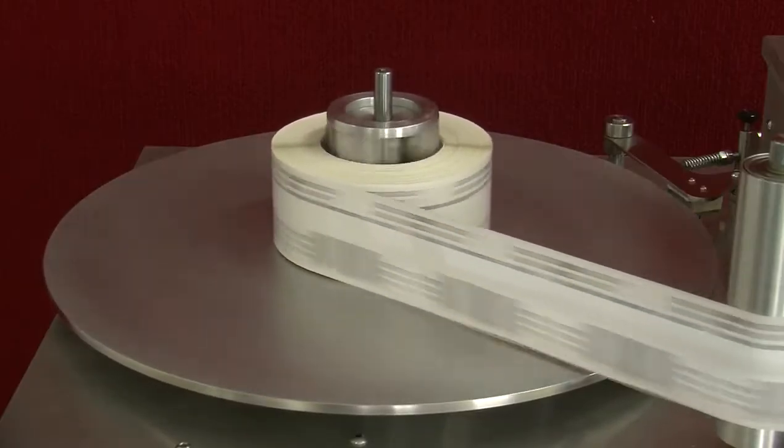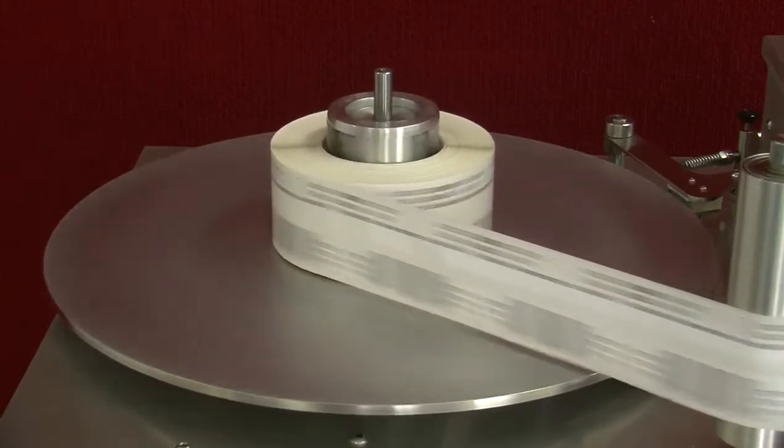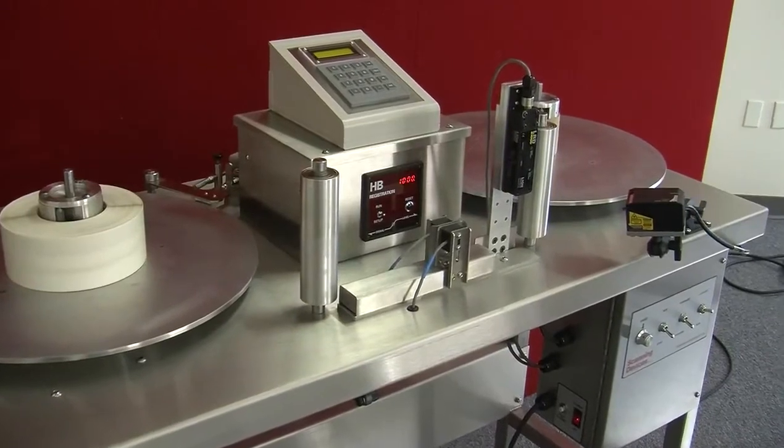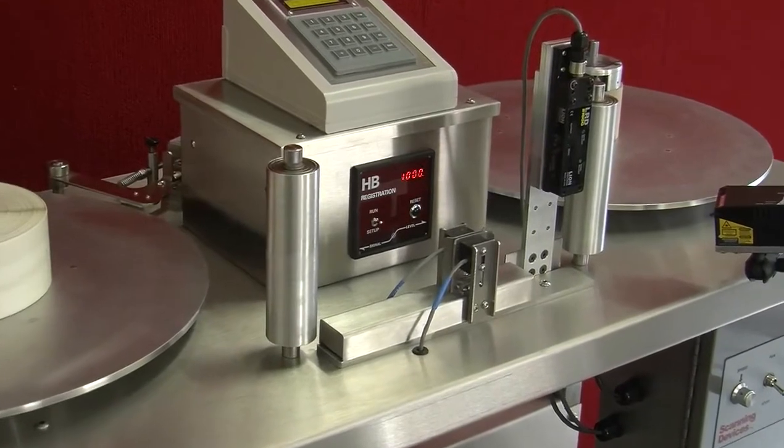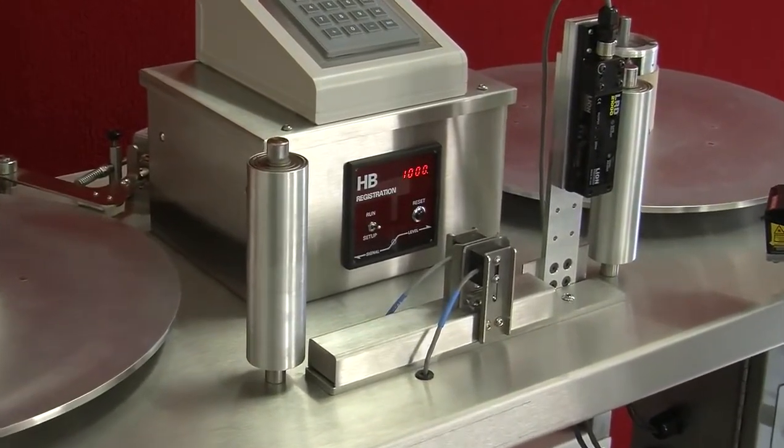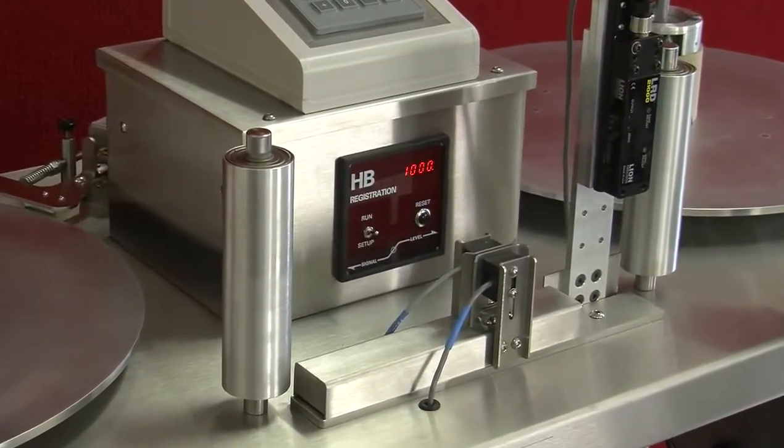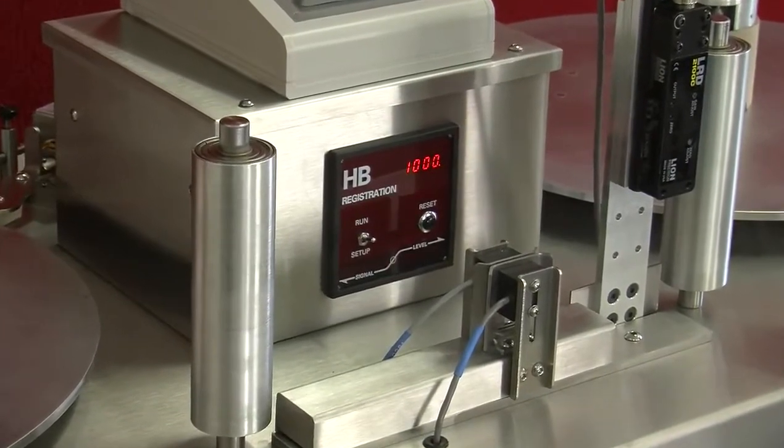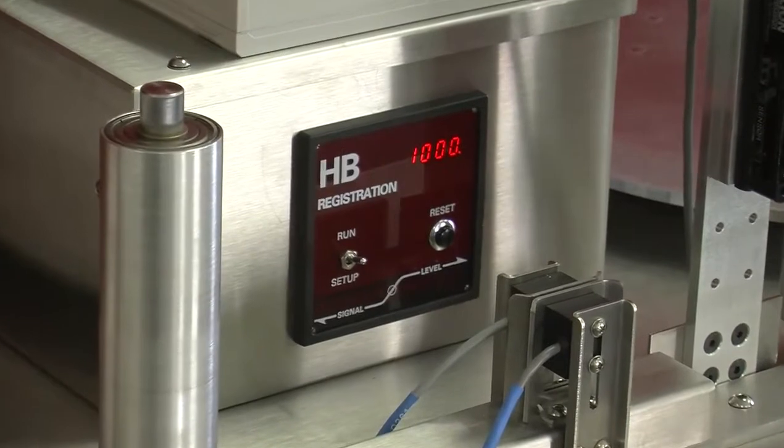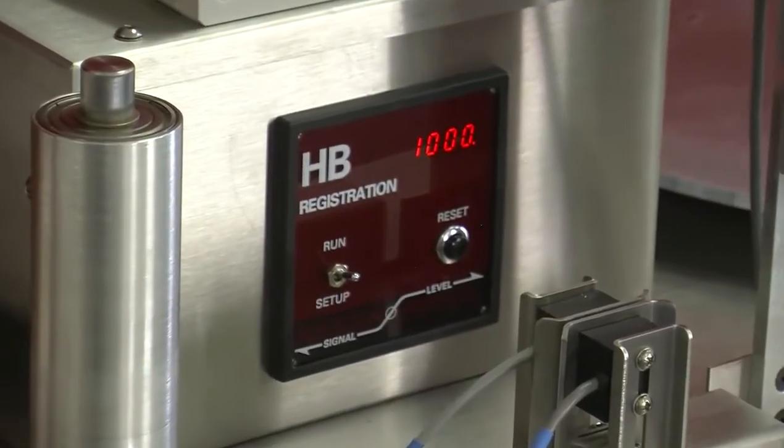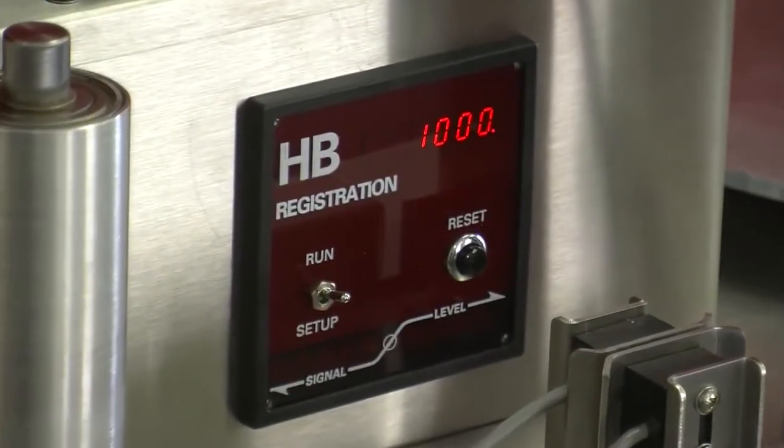The heart of each machine is our proprietary HB registration controller, which contains the machine's processors and operating system. It incorporates a six-digit counting display, a selection switch used to enter setup mode, and an indicator panel used to adjust the sensitivity of counting sensors.